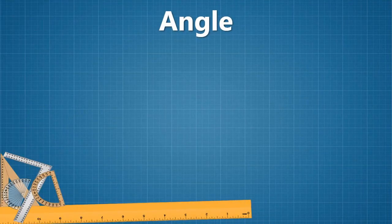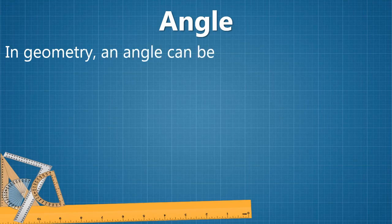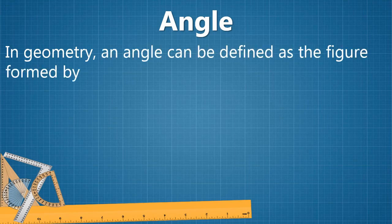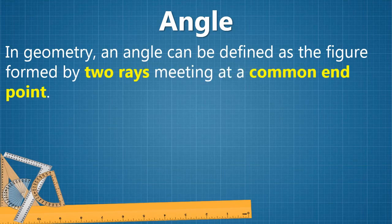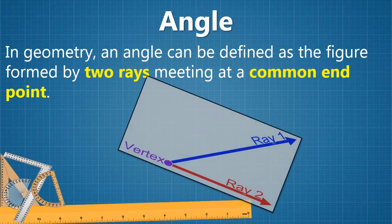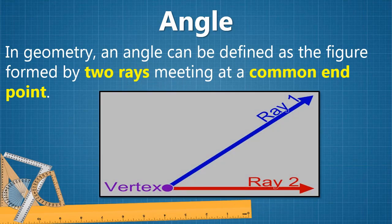Let us know about an important geometrical figure — an angle. In geometry, an angle can be defined as the figure formed by two rays meeting at a common end point. As you can see in the picture, ray 1 and ray 2 are meeting at a common end point to form an angle.